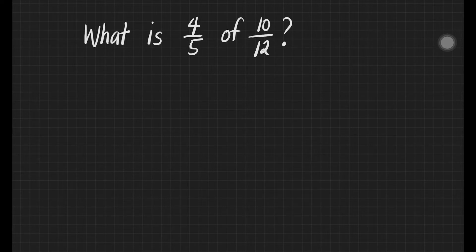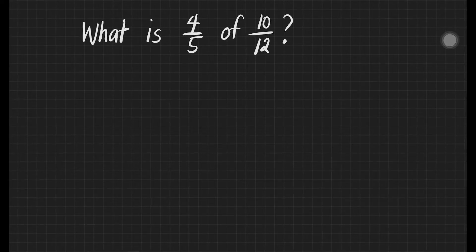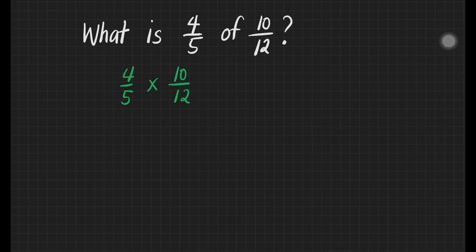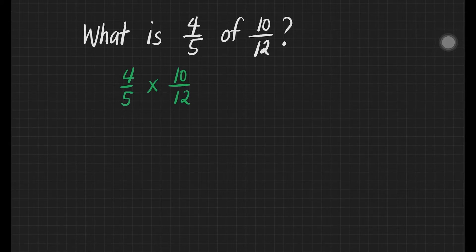We have the first question here. What is 4 fifths of 10 twelves? Let us first rewrite the fractions: 4 fifths times 10 twelves. How do we multiply fractions? We just multiply their numerators and then multiply the denominators, and then reduce to lowest terms. Usually, I ask my students to check the fractions if there is still something that they can reduce to lowest terms or do cancellation. Why? Because it is easier to multiply smaller numbers than bigger numbers.